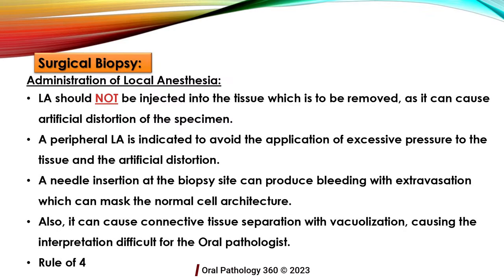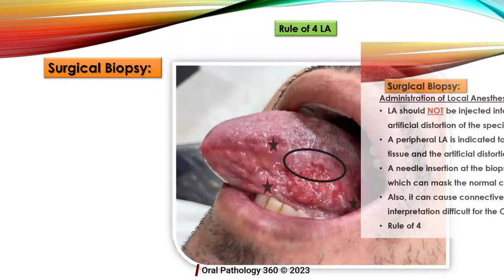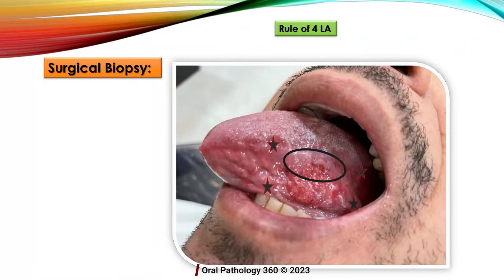We will follow the rule of four, as recommended by oral pathologists. If we have a diffuse lesion such as erythroplasia and we are going to take a biopsy from a particular area, we inject local anesthesia at four points around the area — not directly into the biopsy site. This is called the rule of four.